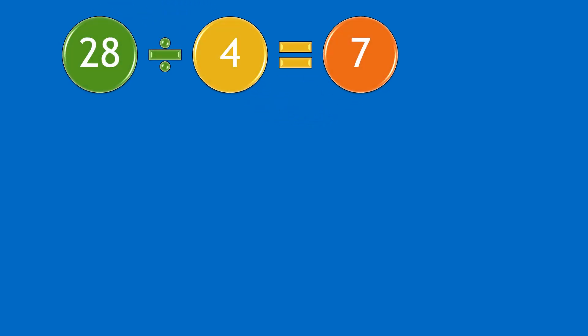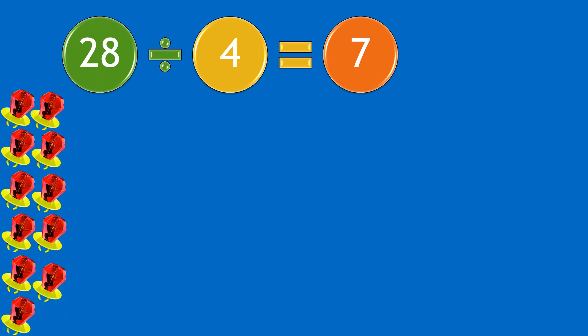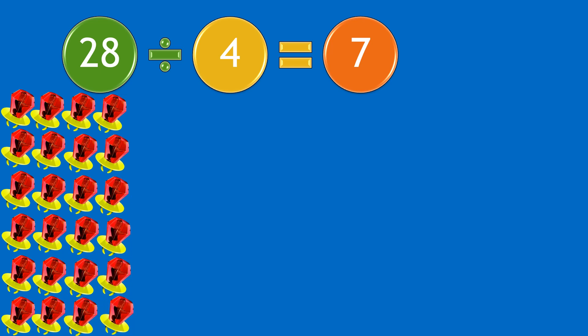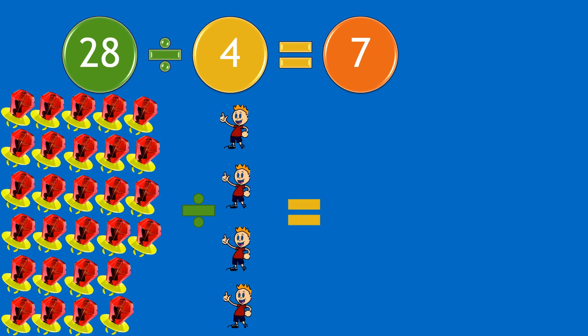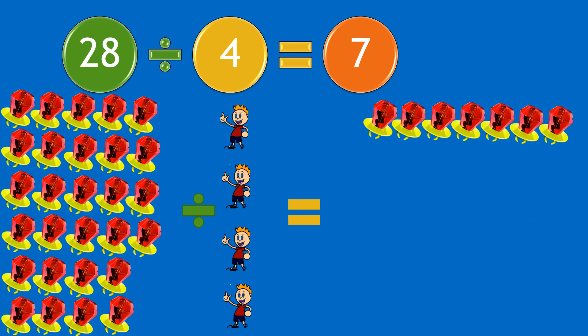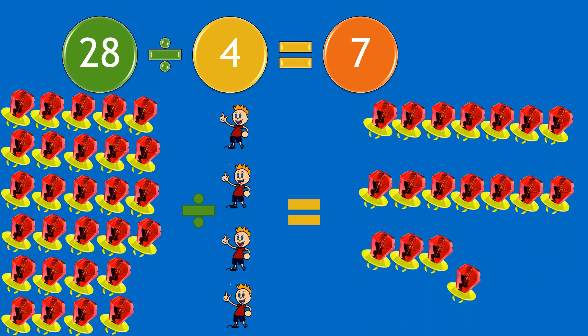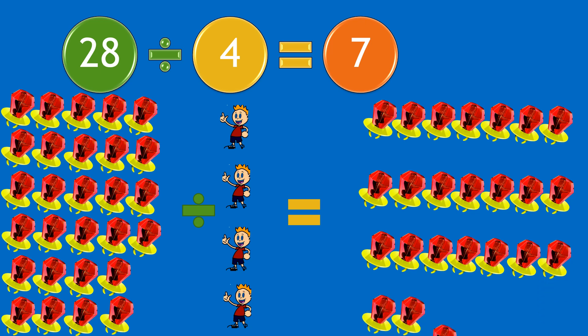Moving on to our next question: 28 divided by 4 equals 7. And if you have 28 ring pops and divide them by four boys, each boy will receive seven ring pops. Yep, each boy has received their seven ring pops.